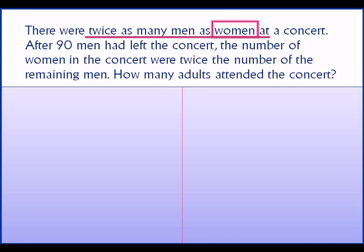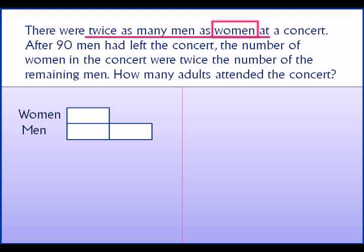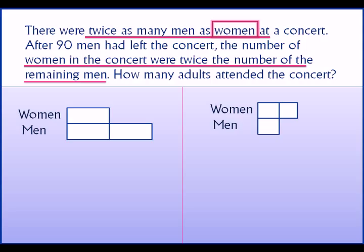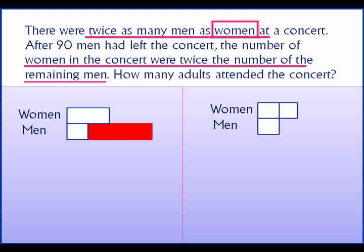So we draw the model for women at first. Women are represented by one unit or one box. Men were twice, so represented by two boxes. At the end, the number of women became twice the number of men — when 90 men left, the number of women became more than the men, twice more, because men became half of women.